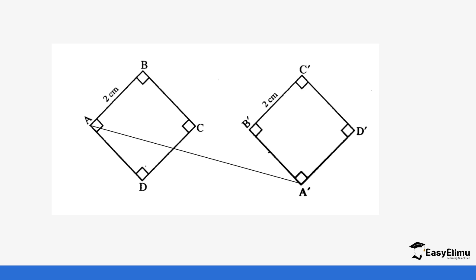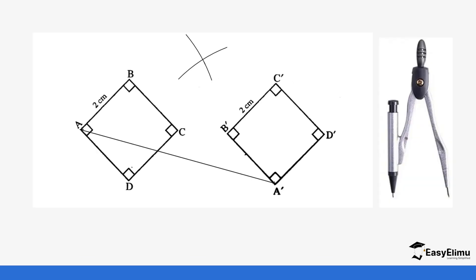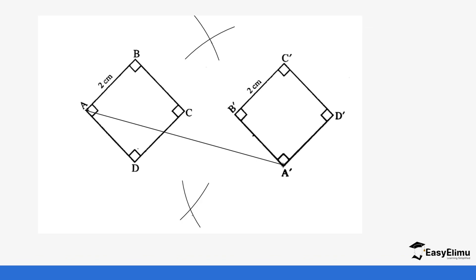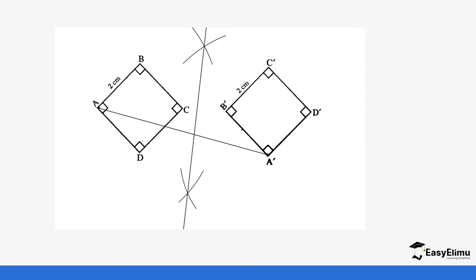Draw the diagram with points A, B, C, D and A prime, B prime, C prime, D prime. The first step is to join A to A prime using a ruler. Then place the compass — the metallic point on A, then on A prime — and make an arc above and below the line A–A prime to create a perpendicular bisector. Join the two arcs using a line — that's how we create a perpendicular bisector using a compass and ruler.